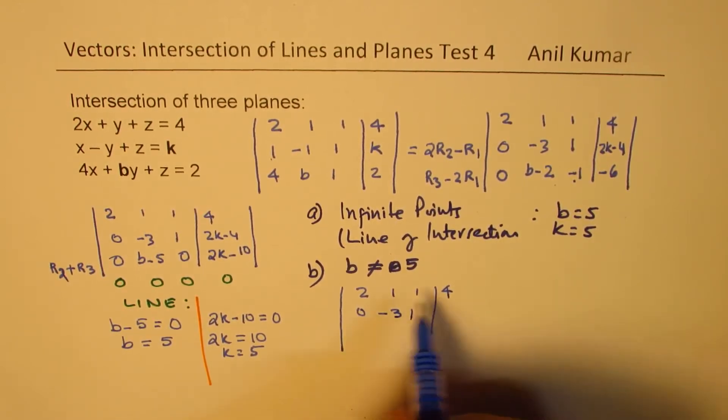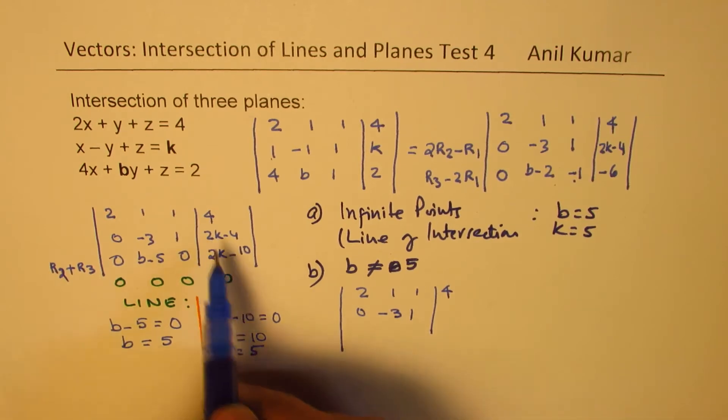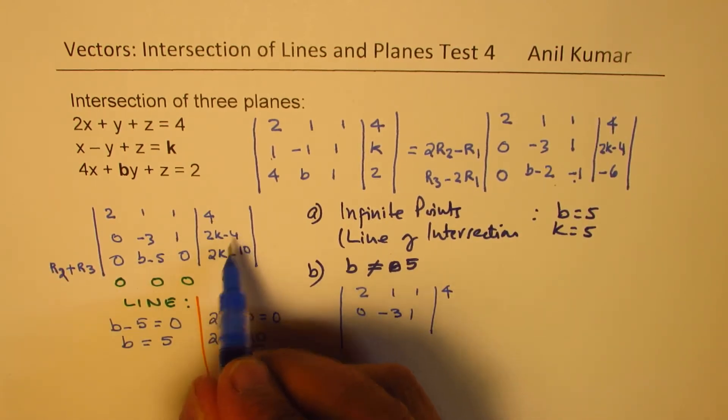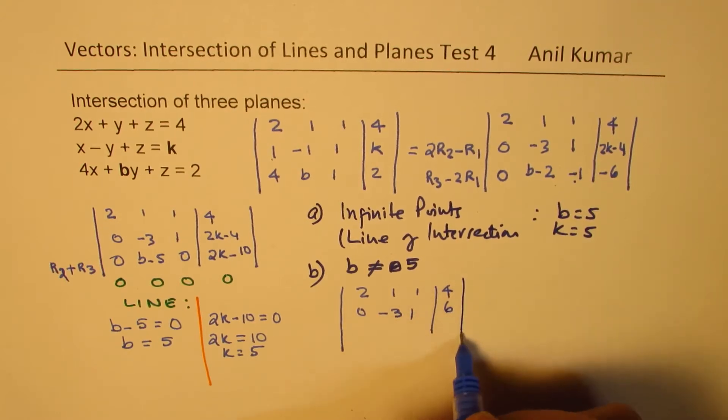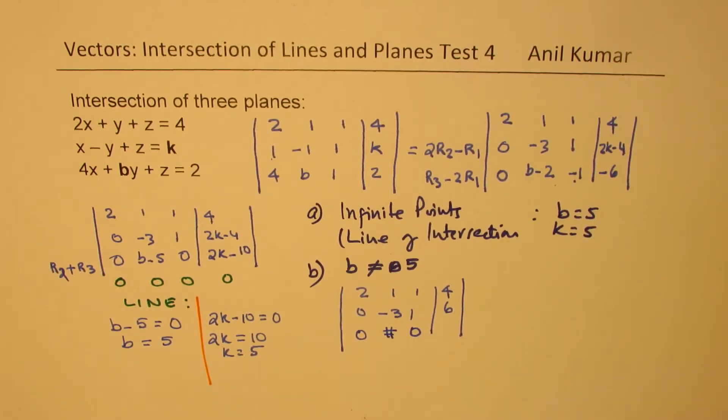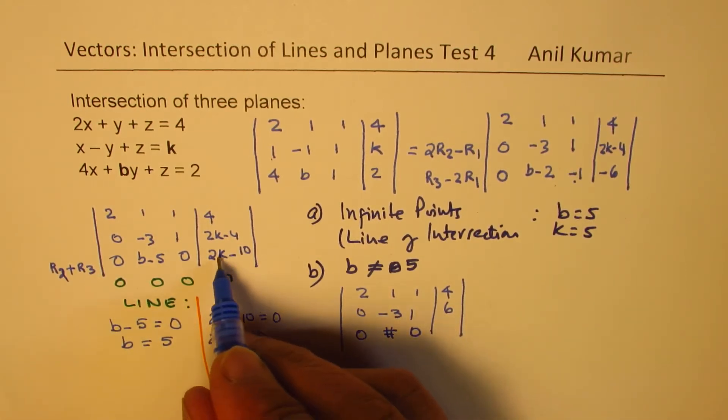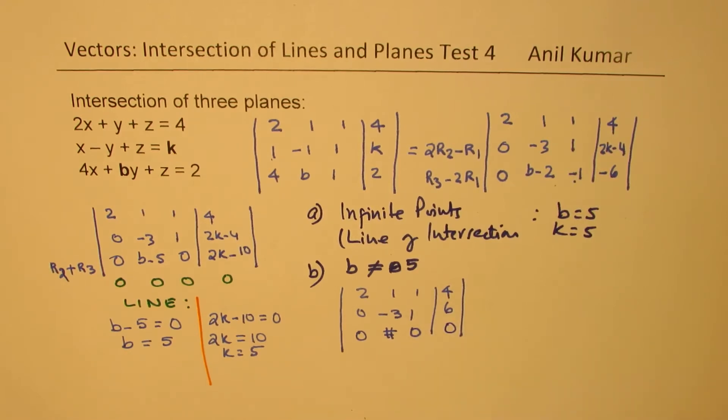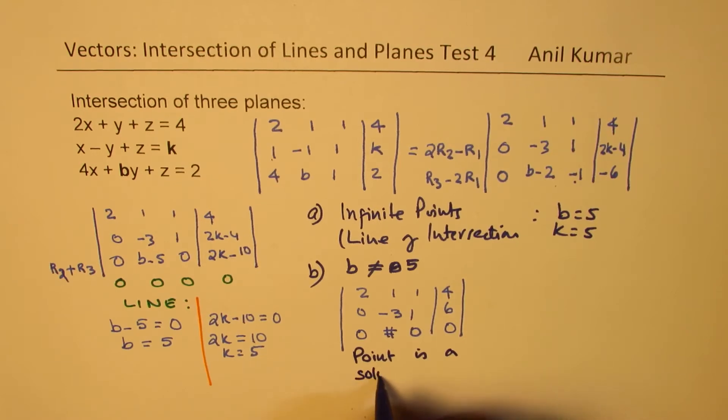So this we have placed as 5. So it will be 10 minus 4, which is 6. And here we have 0, but some other number, not 0. Some other number, not 0, equals to 5. This is 5. So 10 minus 10 equals to 0. So definitely we have a point as a solution. As expected, we get a point as a solution. So we get one solution.